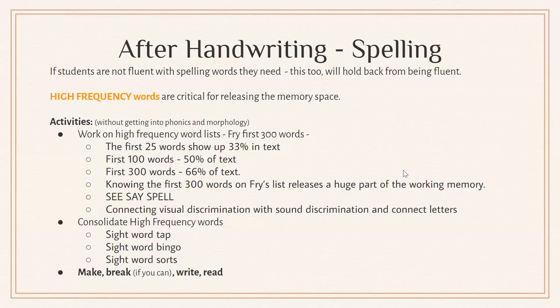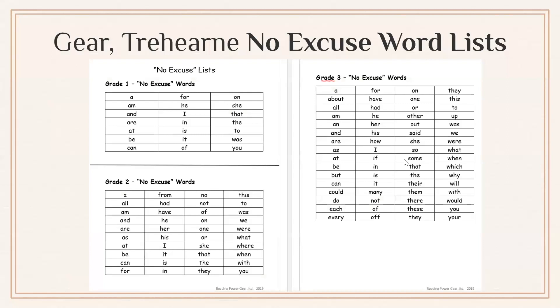We want to connect visual discrimination with sound discrimination so students can make connections with letters — that's beginning phonics. Consolidate high frequency words through sight word tap, sight word bingo, sight word sorts, and make-break-write-read. If you look at Adrienne Gere or Miriam Trehearn, they provide no-excuse word lists as a great guide. On the Alberta Education curriculum website under the resources link, you can search for word lists and find recommended word lists for students from kindergarten through grade three.